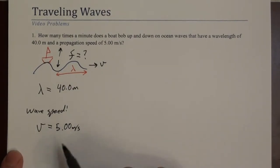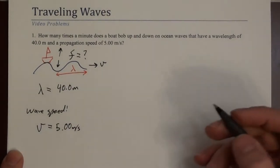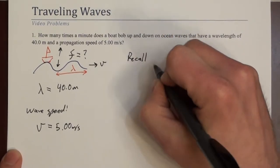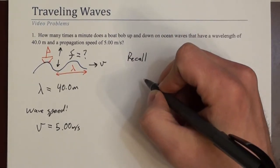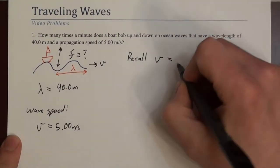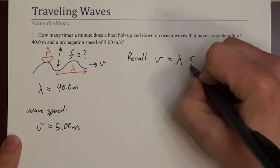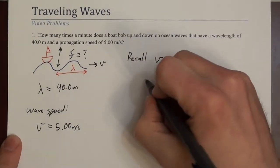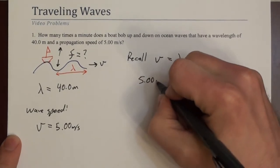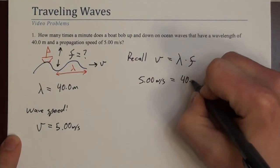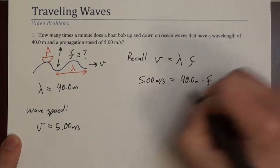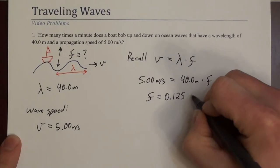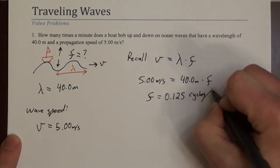Okay, so how do we relate frequency and wavelength and wave speed? Well, it's a very simple relationship. It's velocity equals the product of lambda and frequency. So you can plug some numbers in here. You have 5 m/s equals 40 m times frequency. So if you solve that, what you get is 0.125 cycles per second.